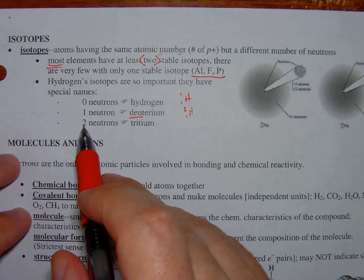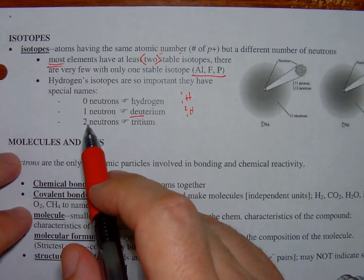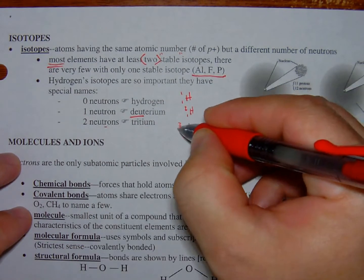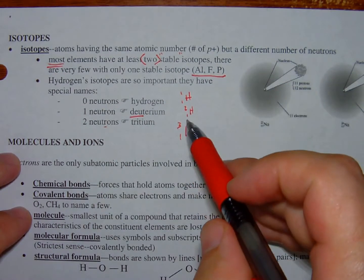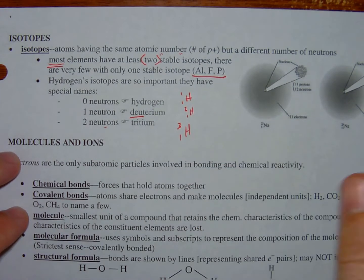Then if we have two neutrons, again, this is a stable isotope of hydrogen. If there are two neutrons, right? This atomic number is still one because it's hydrogen, right? They're all H's. But the mass is three. We call it tritium.